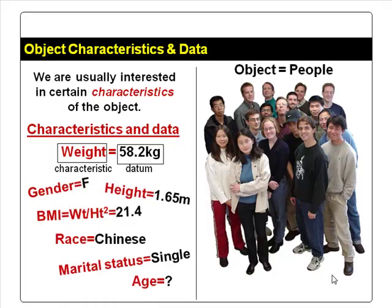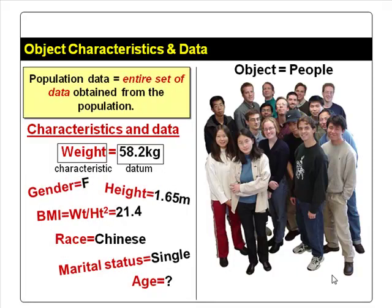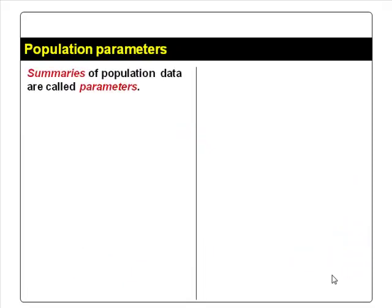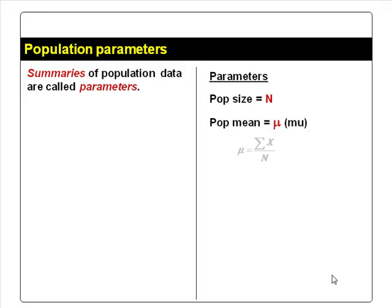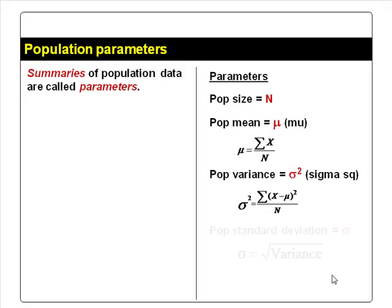If you collect data that describe the characteristics of all the objects in the population, you have the population data. Summaries derived from the population data are called parameters. Common examples of parameters are: population size, denoted by capital letter N; population mean, denoted by Greek letter mu; population variance, denoted by Greek letter sigma squared; and population standard deviation, denoted by sigma, which is the square root of population variance.